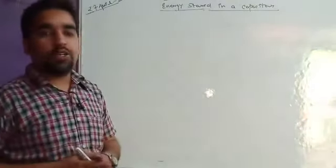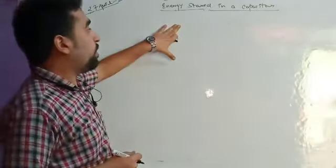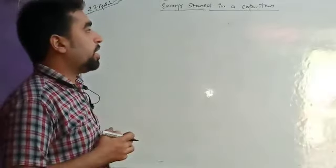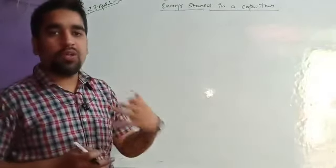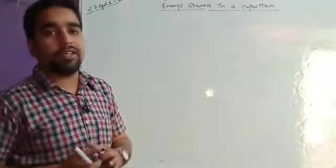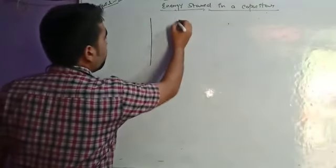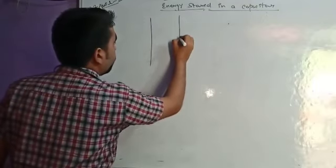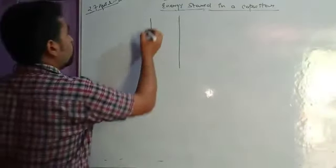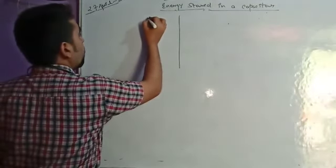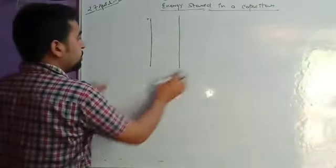Good morning students. Today's topic is energy stored in a capacitor. We are going to calculate the energy which can be stored inside a capacitor, and understand where we do work that gets converted into energy. Suppose we have a parallel plate capacitor and we are charging it. We are giving positive charge by applying a potential difference across it.